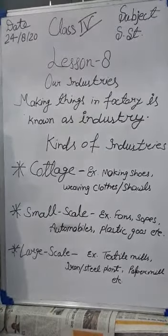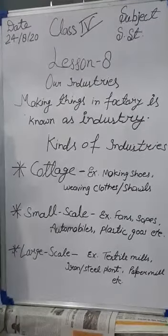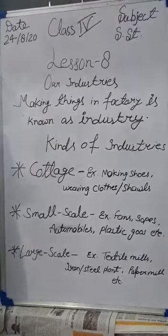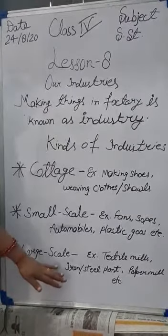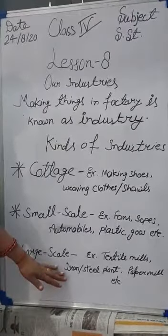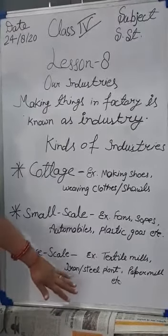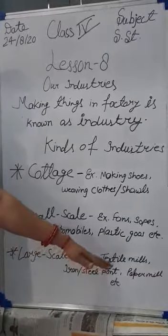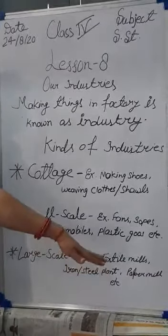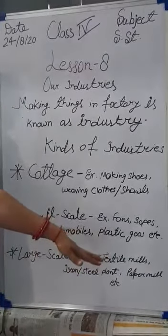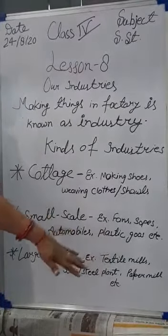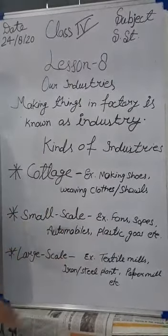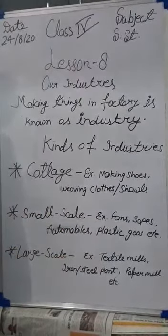They require a huge capital to set up. The examples of large scale industries are iron and steel plants, textile mills, cotton mills, and paper mills. These are the examples of large scale industries.